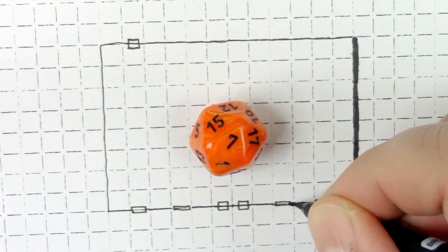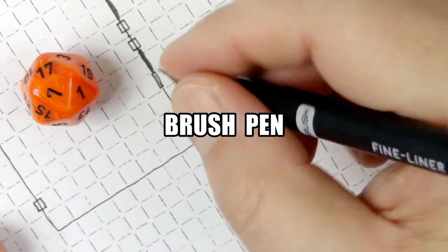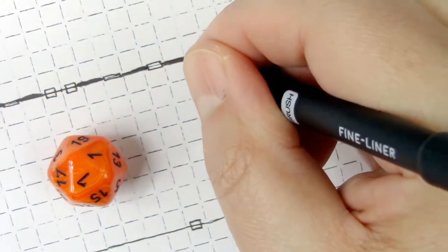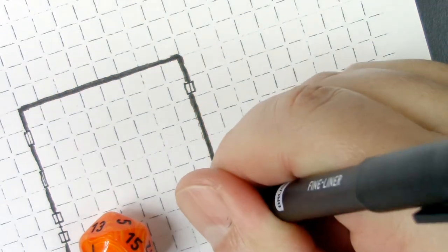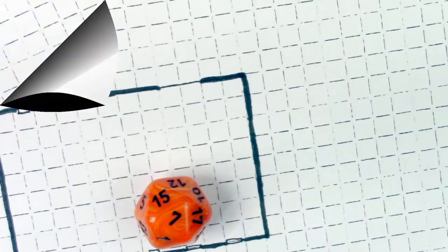Next thing we're going to do is come in with a brush pen, a nice dark rich brush pen, and go around the entire outline of the building. This way it's going to create a nice three-dimensional effect when we add the stones.